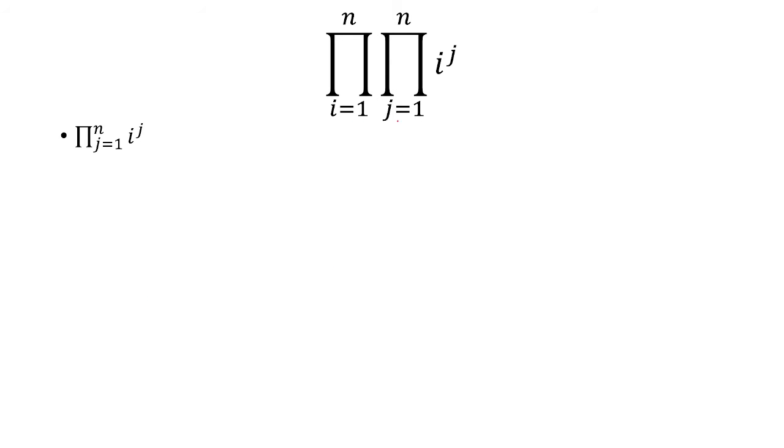Let's first start by looking at the inside product. The inside product is the product from j equals 1 to n of i to the j power. We're going to leave i alone because our index here is in terms of j.